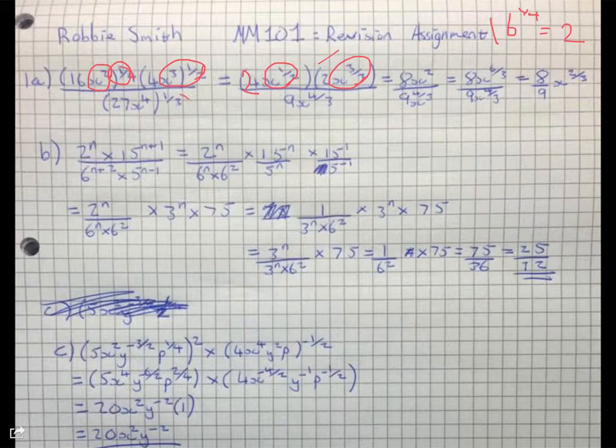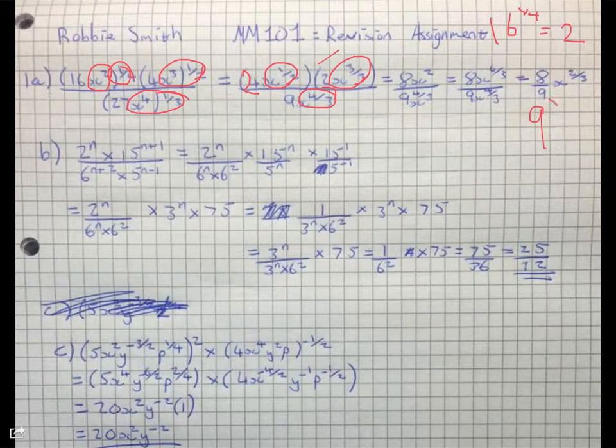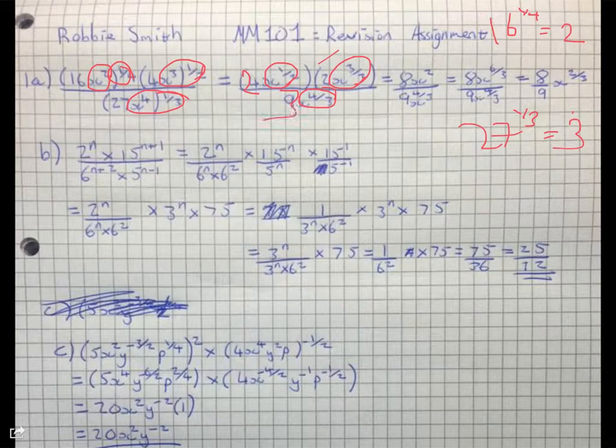And you see we've got this bit here, right? That's fine. But 9 to the power of a third, not 9 sorry, 27 to the third is actually equal to 3. So that should be a 3 there.